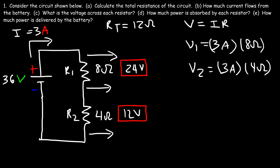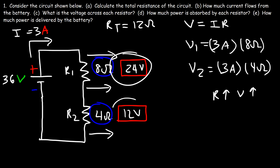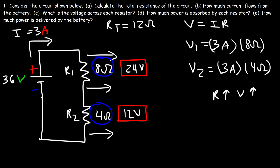Notice that the voltage drop across the 4 ohm resistor is half of the voltage drop across the 8 ohm resistor. As the resistance increases, the voltage drop across that resistor increases. These are known as voltage drops because they decrease the electric potential as the current flows in this direction.